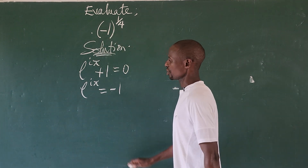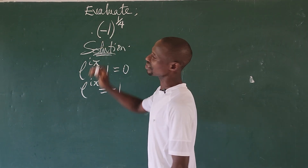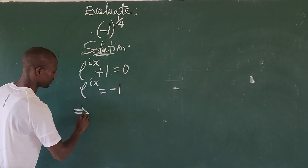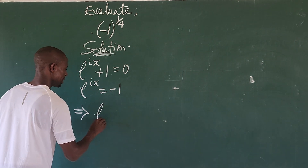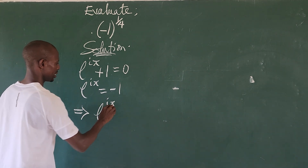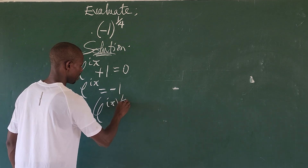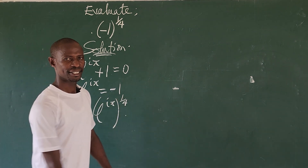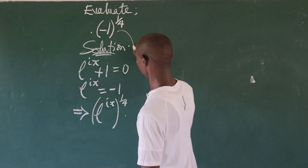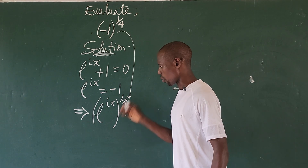We can put the whole quantity on the left-hand side in place of minus one. Rewriting, this implies that e to the power of iπ is raised to the power of one over four. We have succeeded in rewriting the expression inside these special containers.